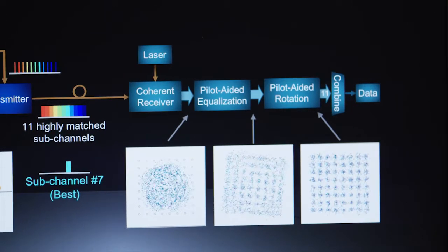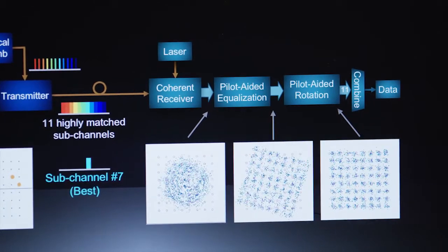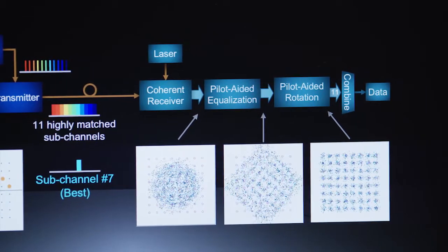And therefore, by comparing the transmitted and received symbols, we're able to figure out the change in laser phase as we're going through. And so this looks pretty stationary.